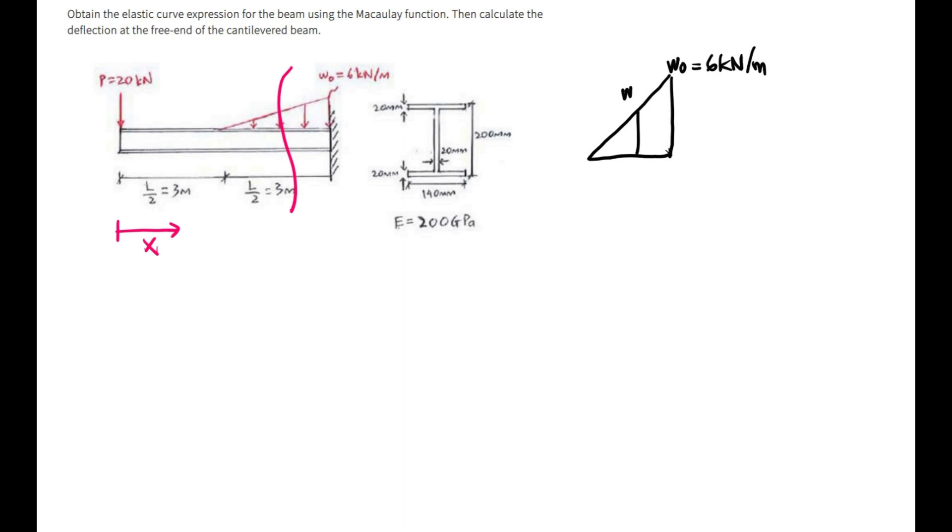When I draw the free body diagram here, this is 20 kN, and then of course this is triangular, then this is W and this is M. So it starts here. My x starts from here. So now this is 3 meters, and of course this is x minus 3.